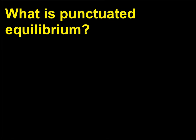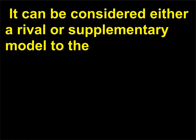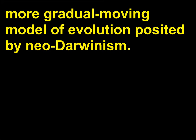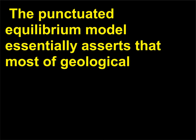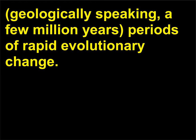What is punctuated equilibrium? Punctuated equilibrium is a model of macroevolution first detailed in 1972 by Niles Eldridge, 1942, and Stephen Jay Gould, 1941-2002. It can be considered either a rival or supplementary model to the more gradual model of evolution posited by Neo-Darwinism. The punctuated equilibrium model essentially asserts that most of geological history shows periods of little evolutionary change, followed by short — geologically speaking, a few million years — periods of rapid evolutionary change.